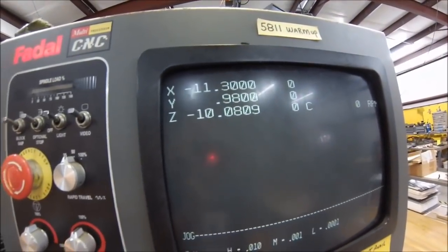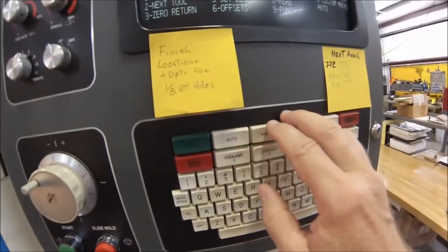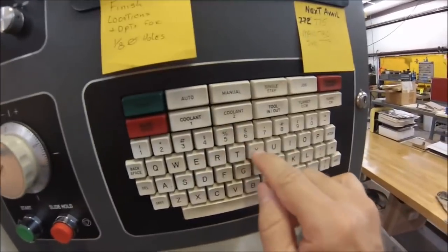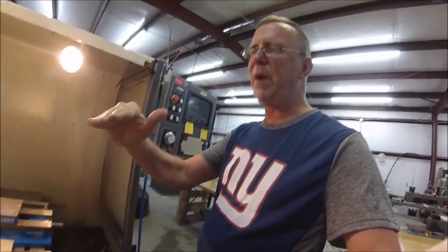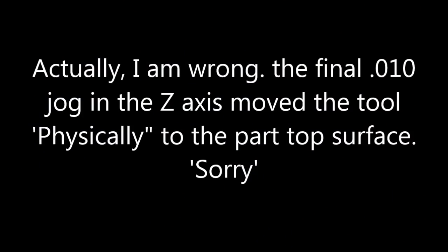When you go to your manual, set length is number five. Hit the Y. Yes. Now physically, this tool is still positioned 10 thou above the part physically. But in the tool table, the registration value puts that tool right on deck with that part.